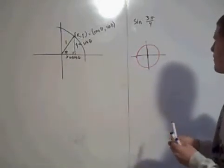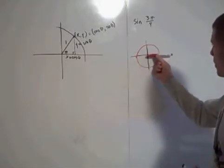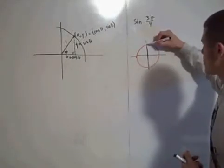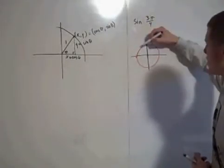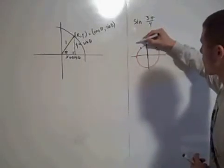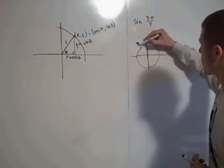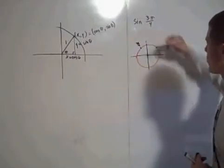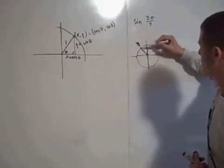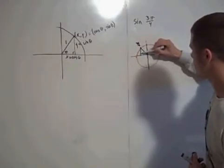And where is 3π/4? Well, there's π/2. So here's π/4, or 45 degrees. Here's π/2, or 90 degrees. Here's 3π/4, or 135 degrees. So here is the triangle you're going to consider.